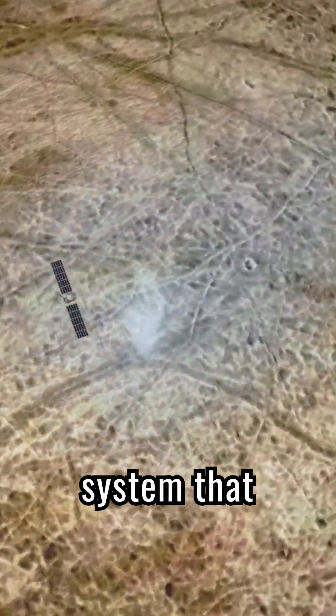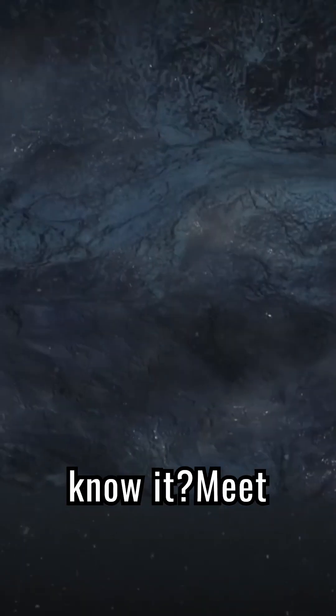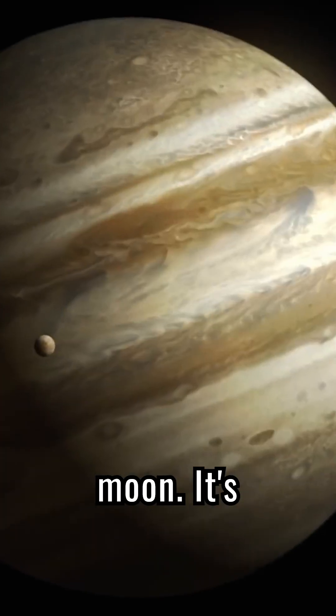Did you know there's a moon in our solar system that could have the ingredients for life as we know it? Meet Europa, Jupiter's icy moon.